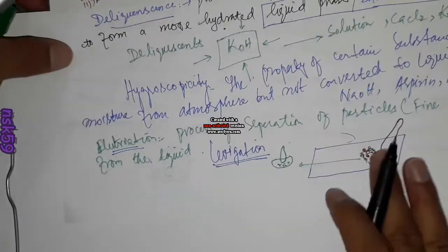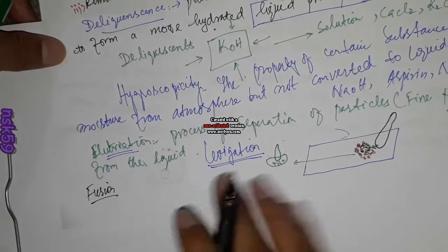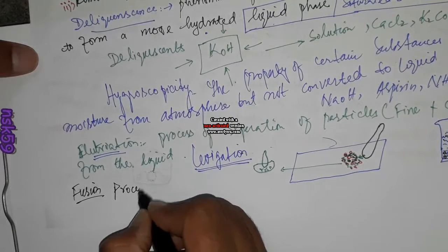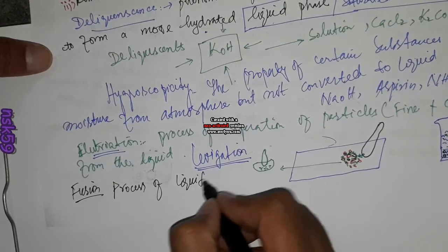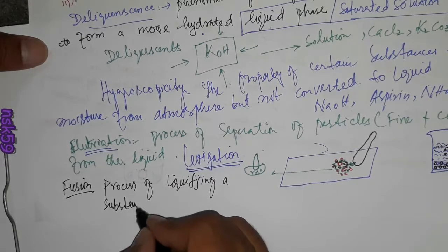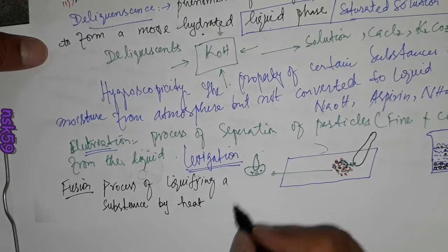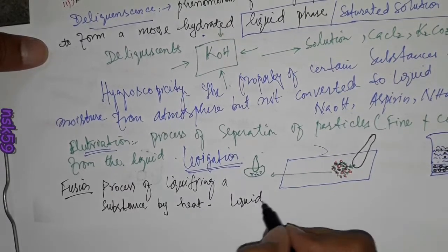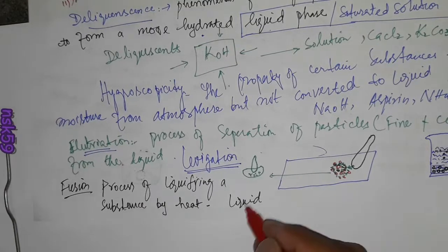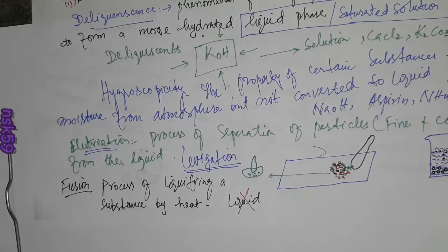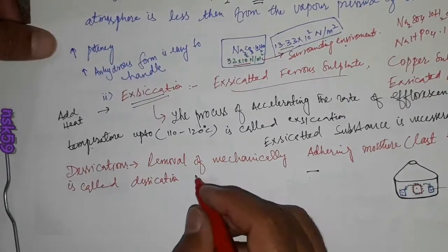Another important physical chemical process is fusion. Fusion is the process of liquefying a substance by heat. We do not add a liquid to dissolve the substance; instead, we heat it until it is liquefied. This process is called fusion.